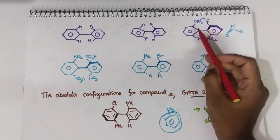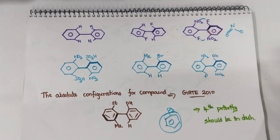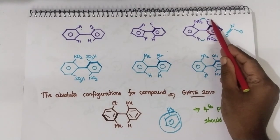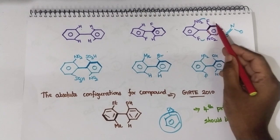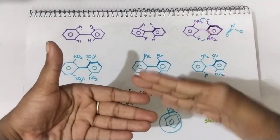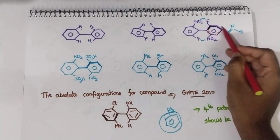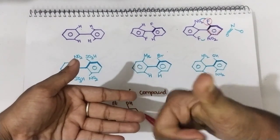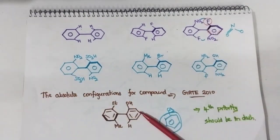Whenever you have a biphenyl system with larger groups, definitely there will be steric repulsion. Due to the steric hindrance it will rotate in order to minimize it. As a result, one group will be pointing upwards — above the plane — and another group will be below the plane. If they give you a dashed line, that group is present above the plane. The thumb represents fluorine and the little finger represents nitro.